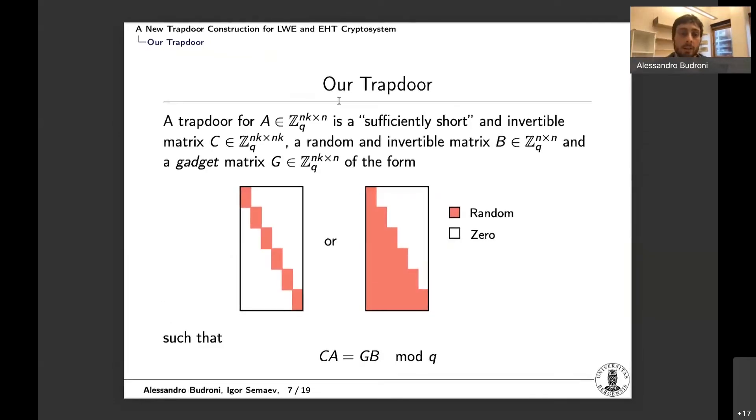So our trapdoor is a bit different. For a matrix A, a trapdoor in our work is a square and invertible matrix C that has to be short, compared to the previous construction, we want C to be square. And then a random and invertible matrix B and the gadget that can be of one of the following two forms where the white part is zeros and the red part is like a lower diagonal is a random matrix. And the difference between the choice of two have implications in security. I will mention a little bit later and also in the decryption inversion algorithm to retrieve the secret. In particular, the first case can be parallelized better. I will assume we choose the first kind. And then, of course, we want the relation CA is equal to GB modulo Q.